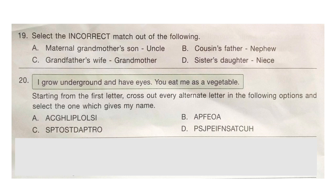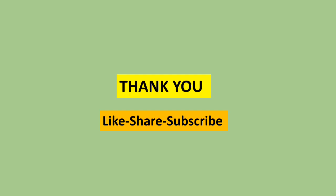Question 20: I grow underground and have eyes. You eat me as a vegetable. Starting from the first letter, cross out every alternate letter in the following options and select the one which gives my name. The correct answer is option C — it gives potato. Thank you for watching this video. New users, please subscribe our channel Olympiad Trainer for more such educational videos and solved question papers. Don't forget to hit the like button if you find the video useful and share it with your friends too.